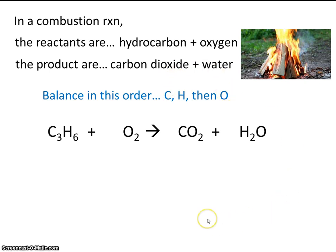So let's give this a go. We have three carbons on the left. That means we need to make three carbons on the right. Now let's do hydrogen. We have six hydrogens on the left, so we need to make six here on the right.